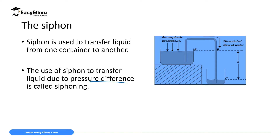If we have a height difference — which is h·ρ·g — and one side is low while the other is higher, there is a pressure difference. And if you have a pressure difference, fluids can flow from where we have higher pressure to where we have low pressure.